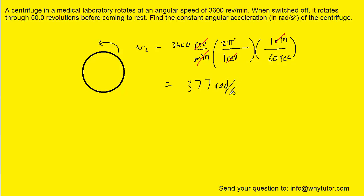So this serves as the initial angular velocity. The question notes that the centrifuge is going to come to rest. So of course, that means the final angular velocity is going to be zero radians per second.